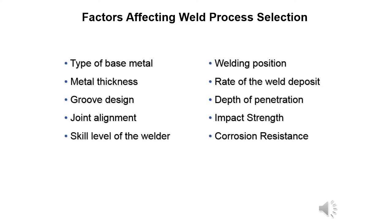The factors to consider include the type of base metal we're going to weld, the metal thickness, the groove design, the joint alignment, the skill level of the welder, the welding position, the rate of the weld deposit, depth of penetration, impact strength, mechanical properties, and corrosion resistance.